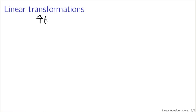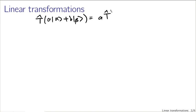What it means for something to be linear is: if I apply the transformation to a times the vector alpha plus b times the vector beta, I get a times the transformation T applied to alpha plus b times T applied to beta. If this identity holds, the transformation you're working with is linear.